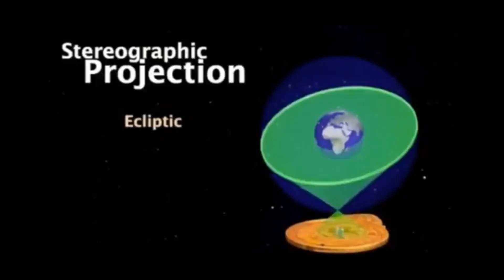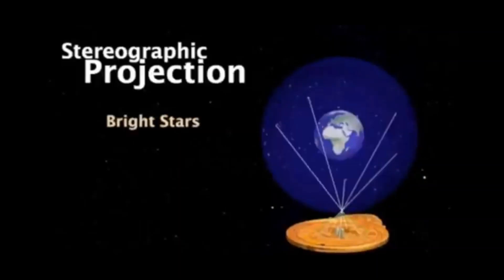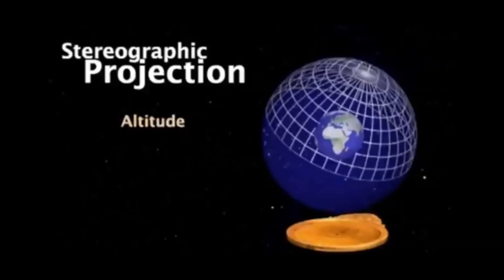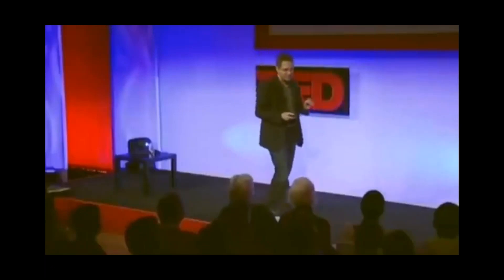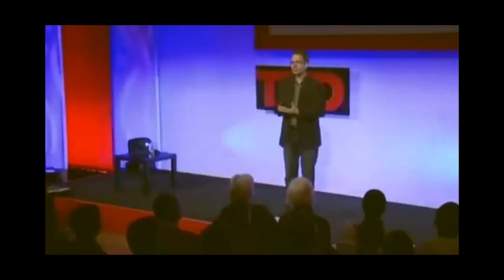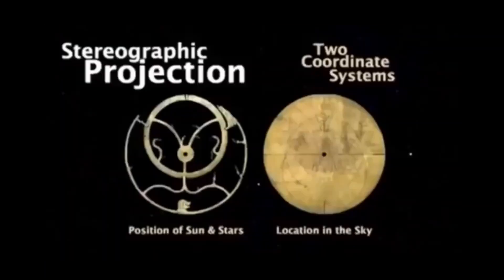The ecliptic, which is the path of the sun, moon, and planets, corresponds to an offset circle. The bright stars correspond to little daggers on the rete. And the altitude corresponds to the plate system. The real genius of the astrolabe is not just the projection — it brings together two coordinate systems so they fit perfectly. There's the position of the sun, moon, and planets on the movable rete, and then there's their location on the sky as seen from a certain latitude on the back plate.